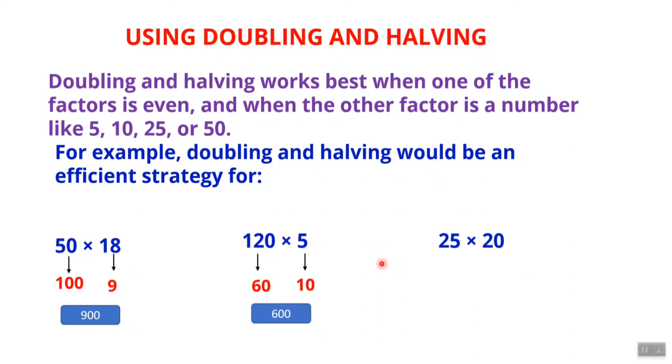Let's take another example: 25 times 20. We can double 25 to get 50 and take half of 20 to get 10. So 50 times 10 equals 500.